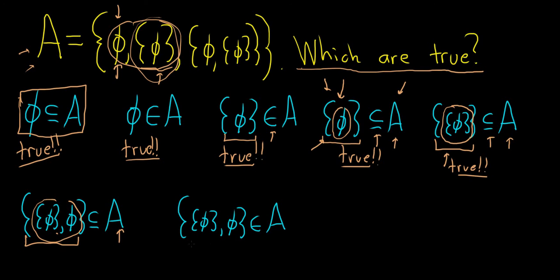And the last one is saying that this set here is an element of A, and it is. It's right here, right? That's an element of A. So all of these are actually true. So every single statement is true.